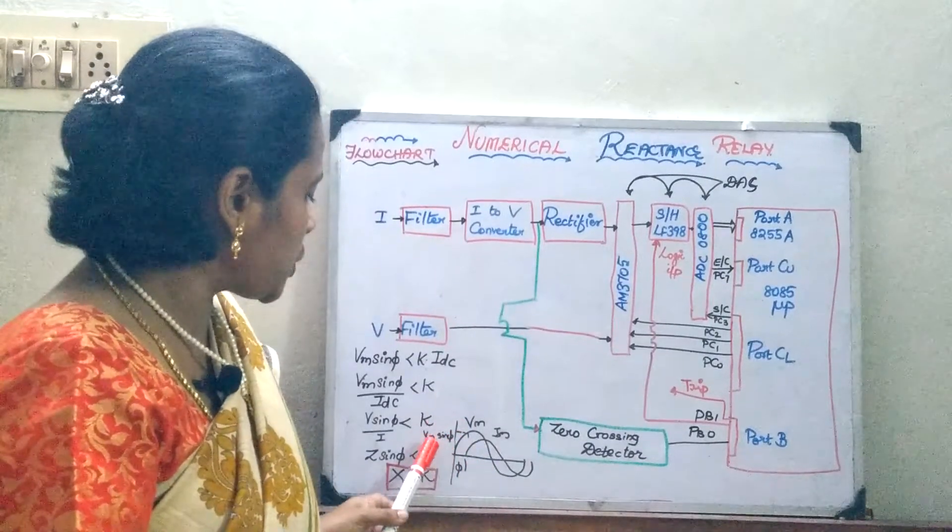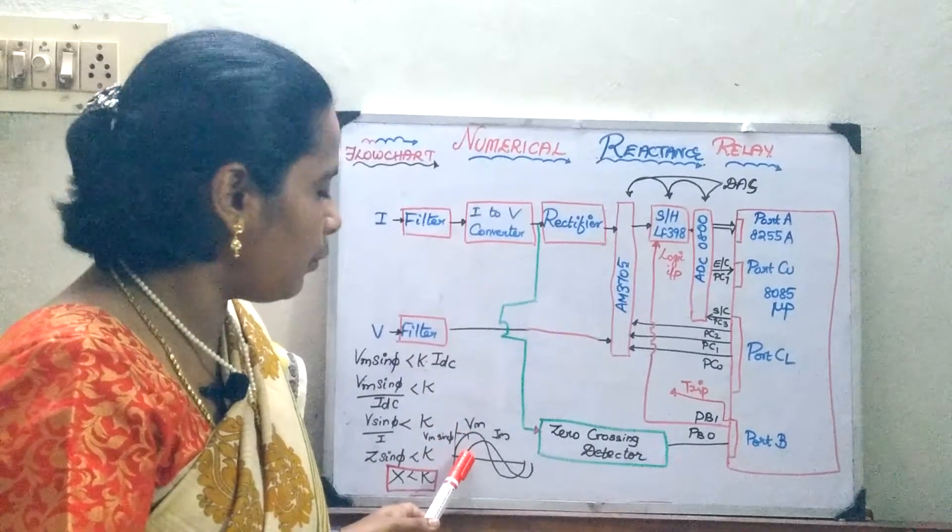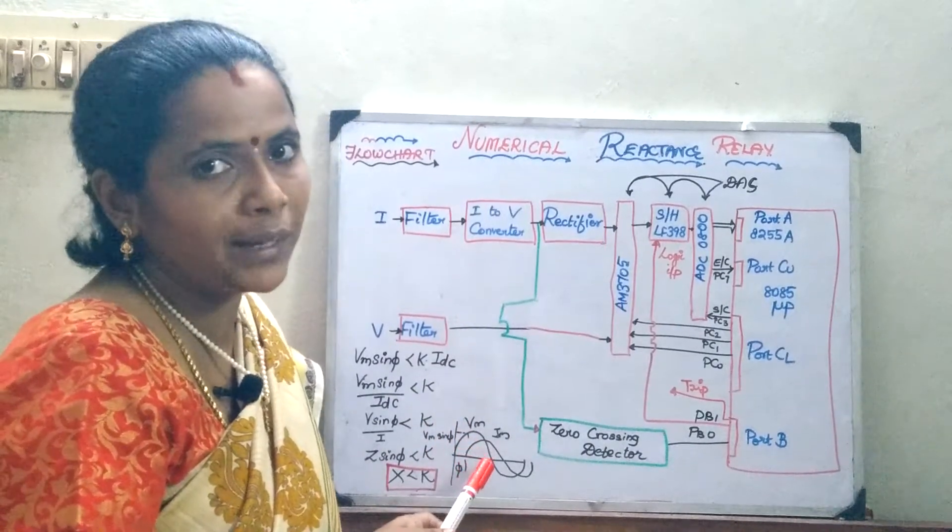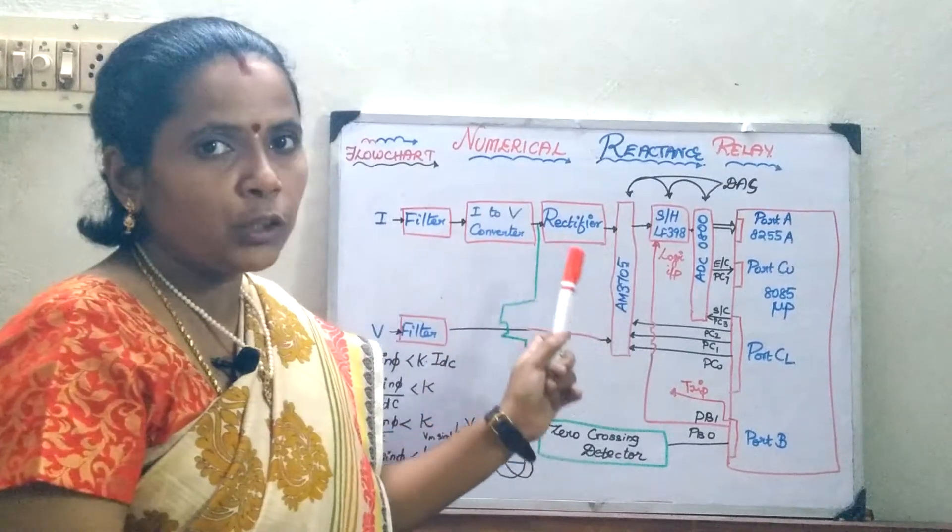That is you are going to measure the Vm sin phi value. Whenever the current is going to reach the zero, you are going to measure the value of the reactance. Now, the other principle are going to be the same.